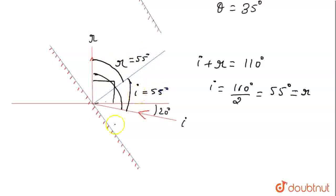Now we have to find theta for this second case — theta being the angle the plane mirror makes with the horizontal.